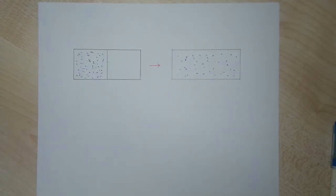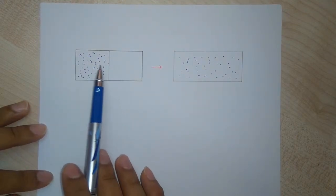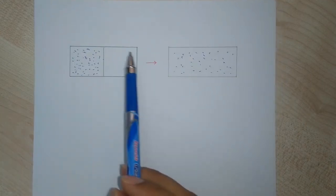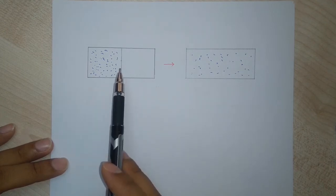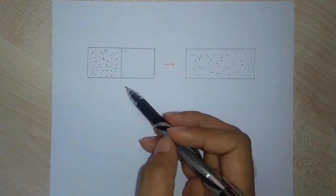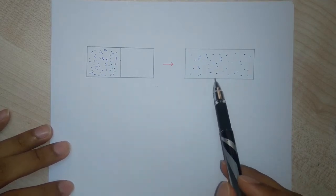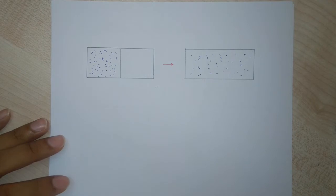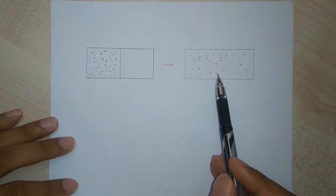Next we'll discuss the free expansion problem introduced earlier to explain entropy. Consider a box partitioned at one end, filled with gas. The system is insulated — no heat flows in or out. When we remove the partition, the gas expands to fill the entire box.